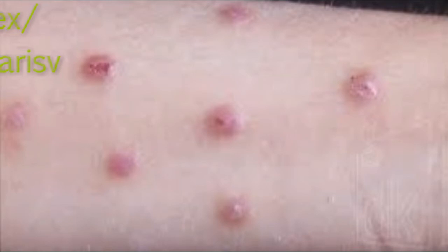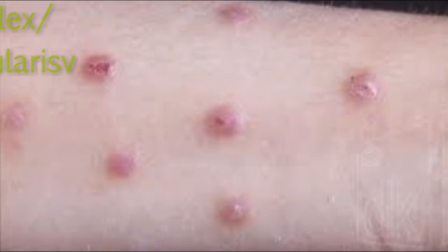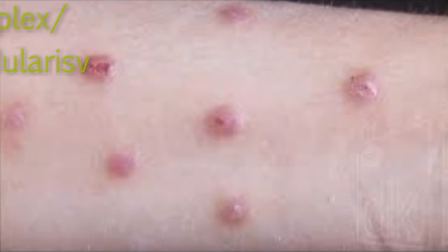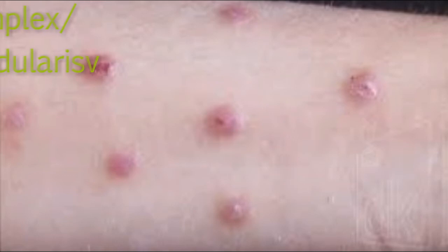The lesions of prurigo nodularis consist of dome-shaped nodules that may be eroded or crusted, and are due to persistent rubbing.